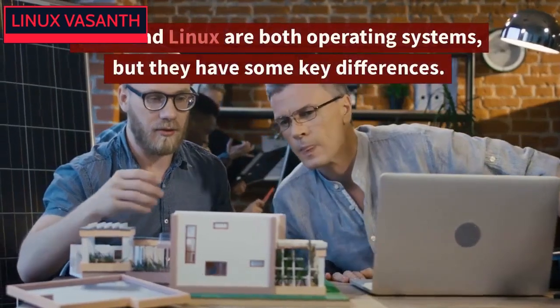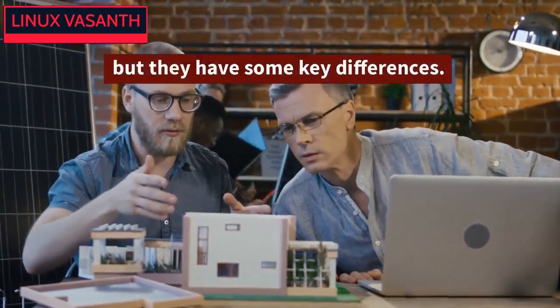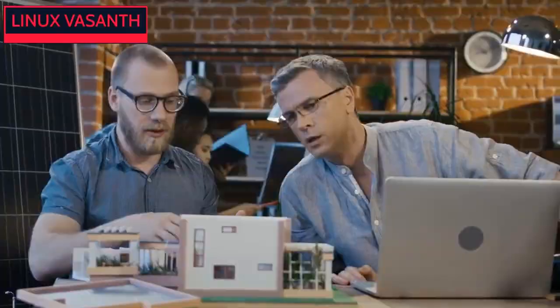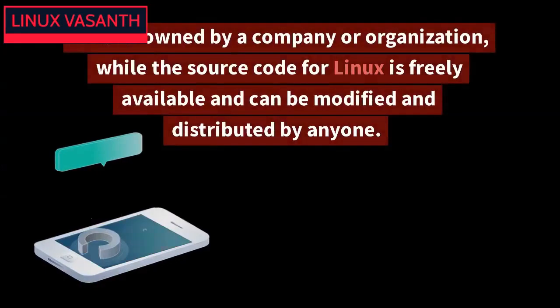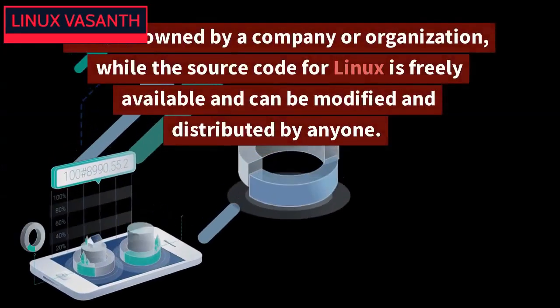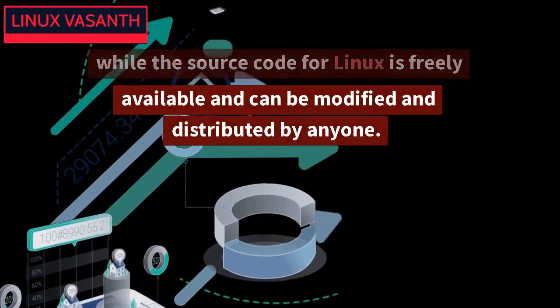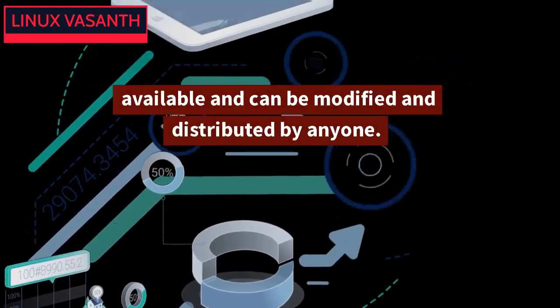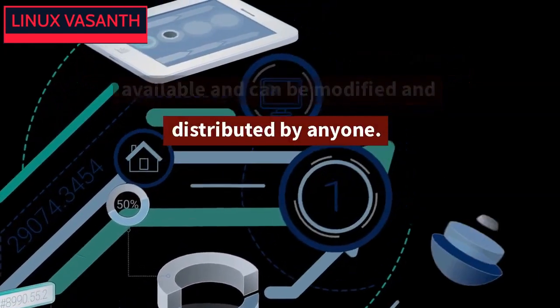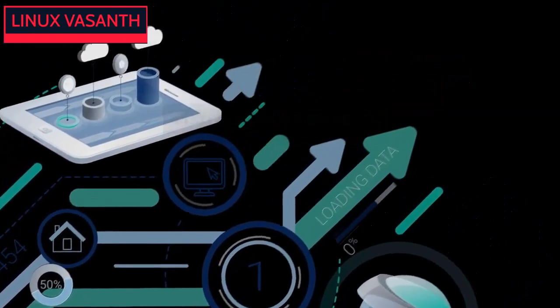Unix and Linux are both operating systems, but they have some key differences. Unix is owned by a company or organization, while the source code for Linux is freely available and can be modified and distributed by anyone.